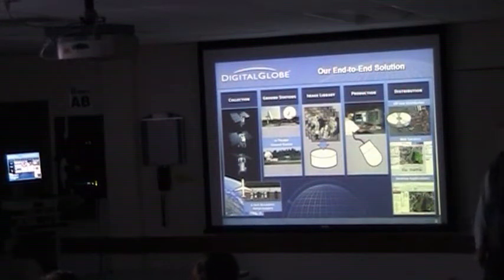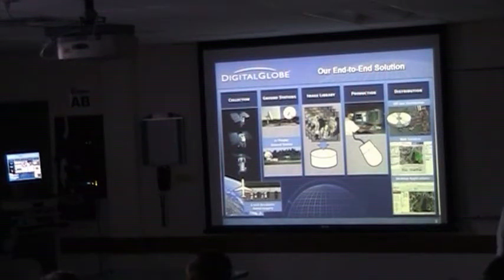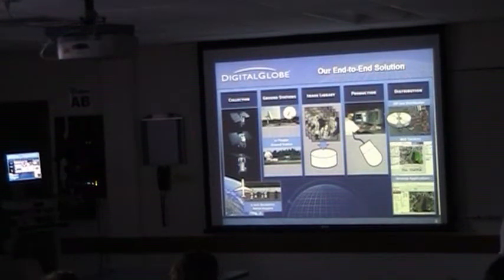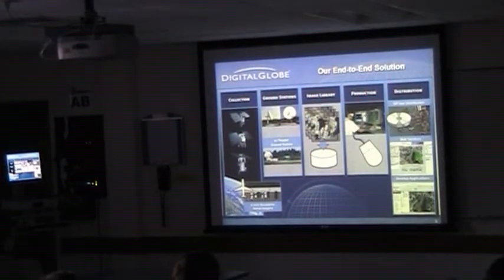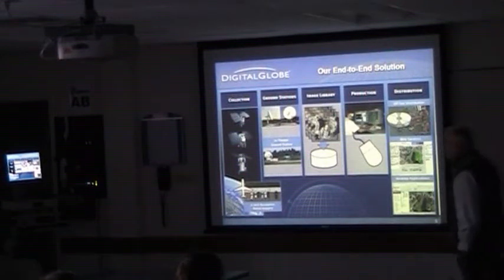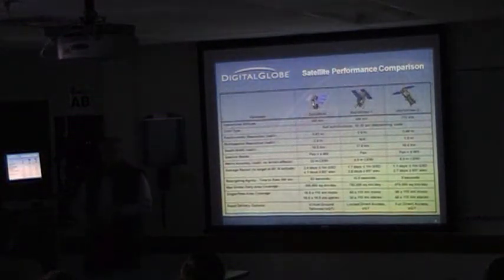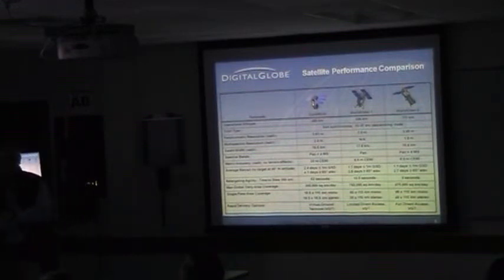Three technologies have really made the business possible: CCDs — the same things in your digital cameras — for digital imagery; storage, where the amount we have now would cover many football fields of warehouses if it were old tape drives from 20 years ago; and personal computers. Google can put imagery out on the web and people can surf around their neighborhoods. All the many different applications are possible on personal computers, a huge difference from 20 years ago when everybody needed mainframes.